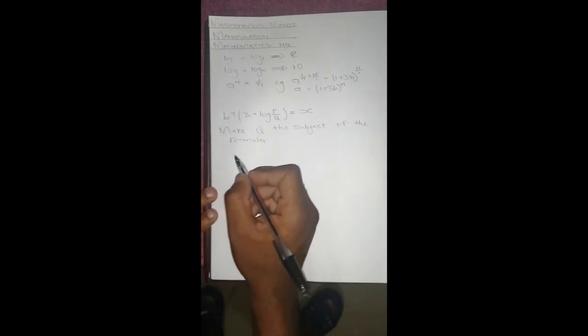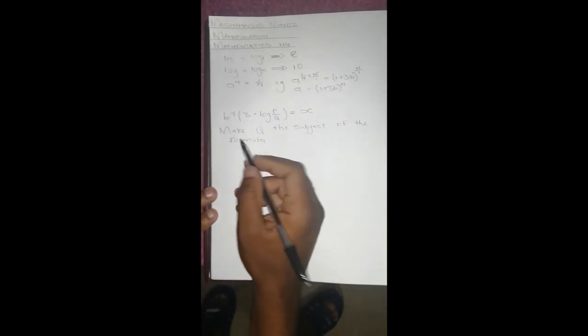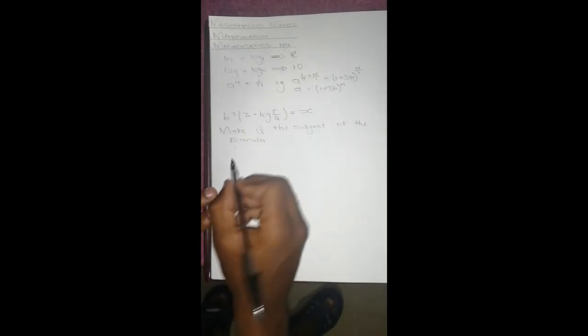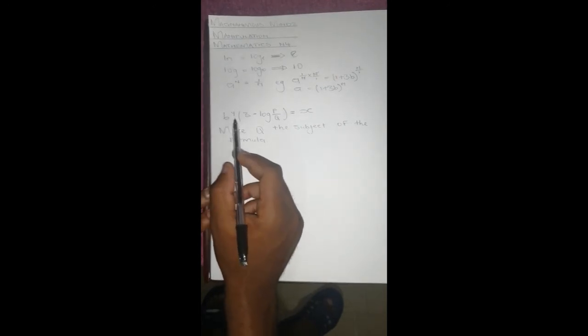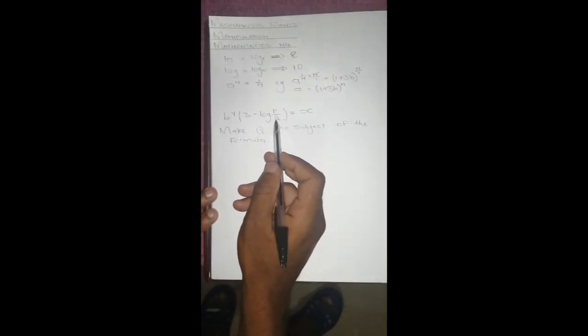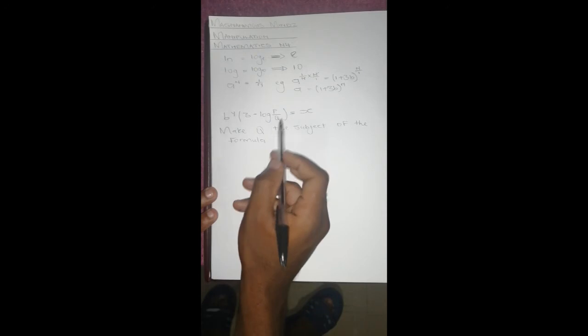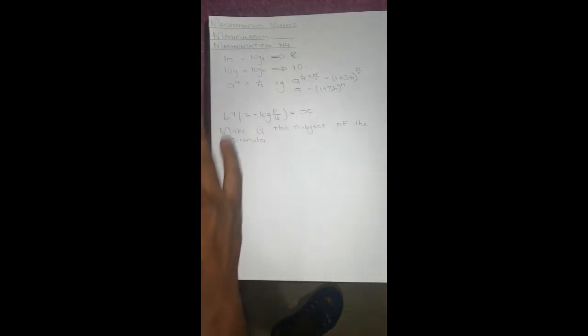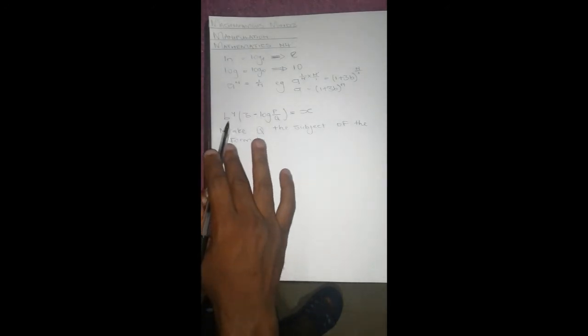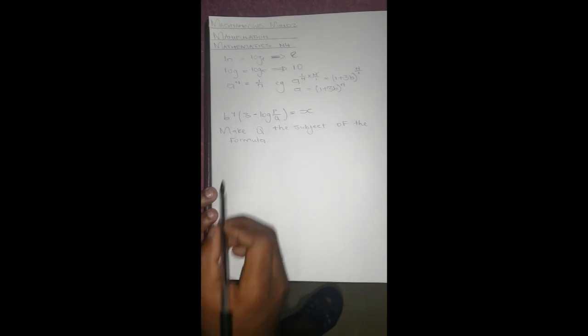So let's go back to our question and try to answer using the basics that we've just recapped on right now. So we are told to make q the subject of the formula, and this is what we have. So firstly we'll have to isolate, we need to isolate this part and leave it alone.